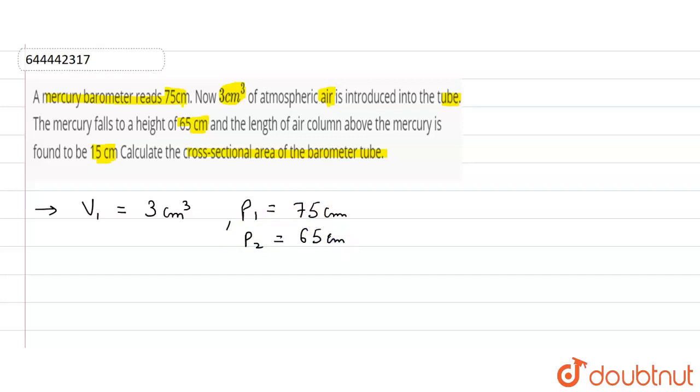So now the level of mercury falls to 65 centimeters because the air in the tube exerts pressure on it. The pressure which will be exerted by the air will be equal to 75 minus 65, which is equal to 10 centimeters. This is the pressure which is exerted by the air.